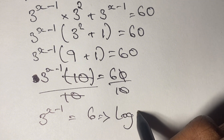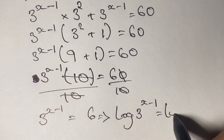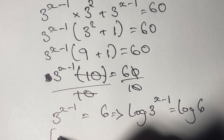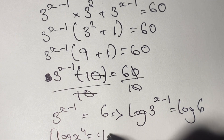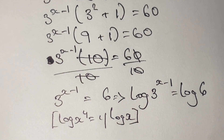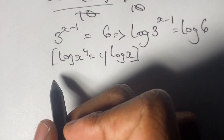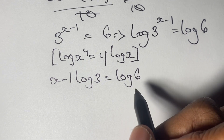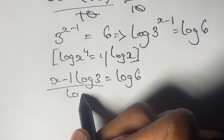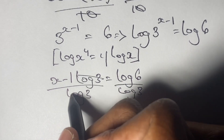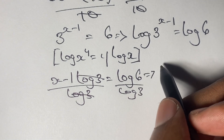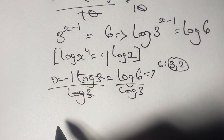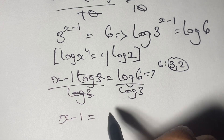From here, we take the log of 3 to the power of x minus 1, and we say that equals the log of 6. We simplify using our logarithm rule, which states that log x to the power of y is the same as y times log of x. Applying this rule, we have x minus 1 times log 3 is equal to log of 6. Our next step is to divide both sides by log 3 — log 3 cancels on the left, and on the right we have log 6 over log 3. We then take the factors of 6: we use 3 and 2, since 3 times 2 gives us 6. So x minus 1 equals log of 3 times 2, over log 3.